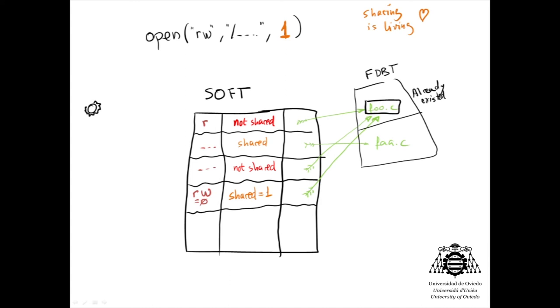Each process has its own process open file table with a pointer to the corresponding system open file table entries of the different file descriptors in use. Guess what? We need to create a new entry in this table